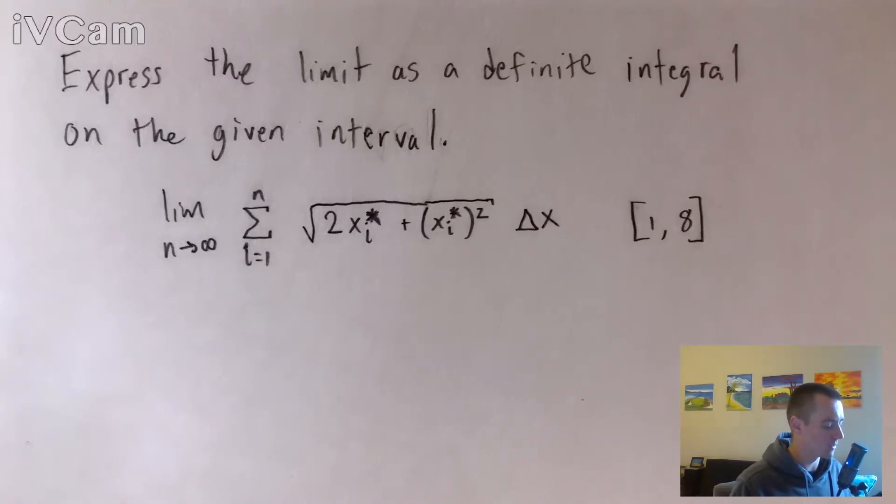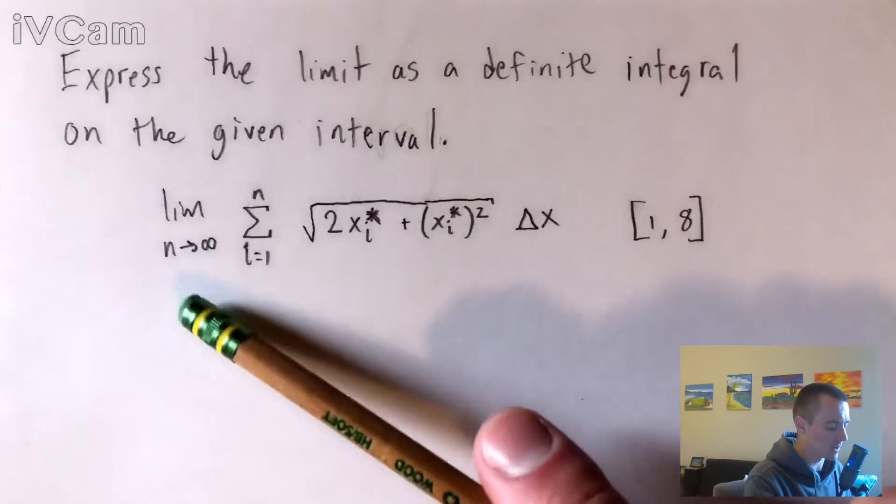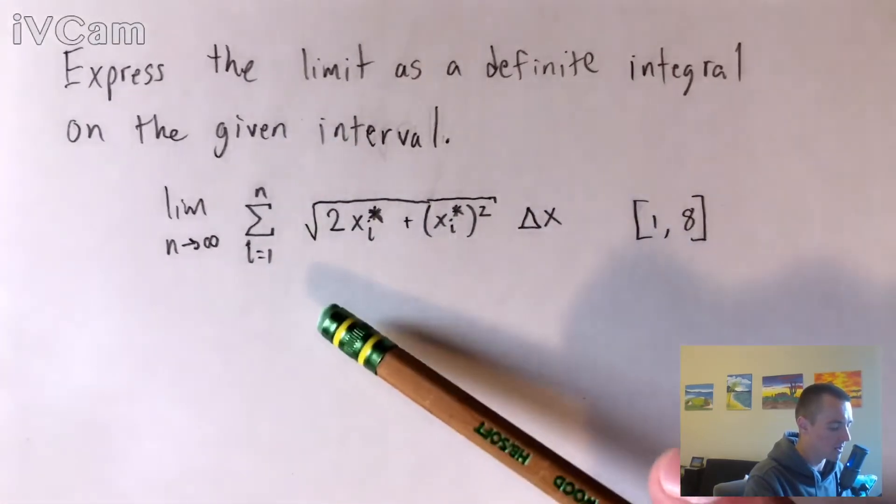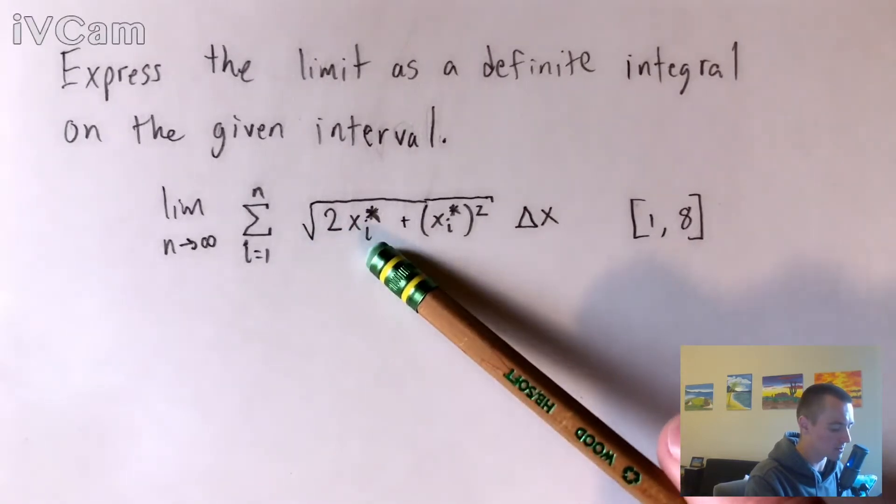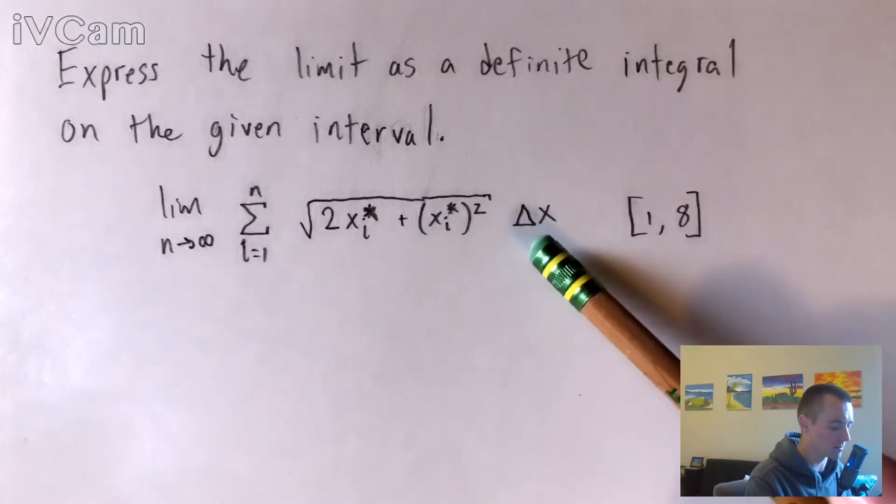We're just going to express the limit as a definite integral on the given interval. So this is the limit that we're given. We have the limit as n goes to infinity of the sum from i equals 1 to n of the square root of 2xi star plus xi star squared all times delta x.